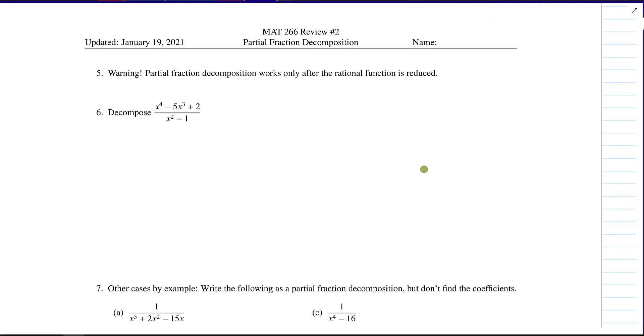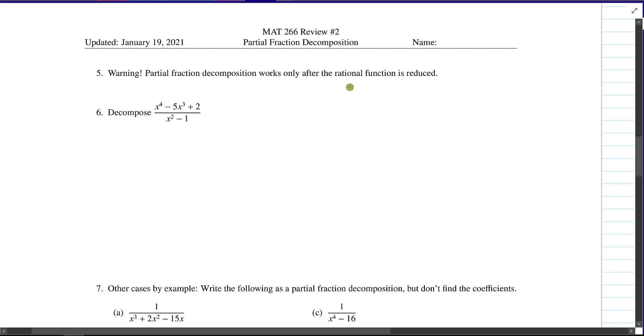So the next thing I want to say is that partial fraction decomposition only works after the rational function is reduced. And what do I mean by that? Well, if we think about this fraction right here, say 17 thirds, when you learned about fractions way back in elementary school, you were told to rewrite this maybe this way, to write it as 5 and 2 thirds. And we would say that that is simplified and maybe reduced down.